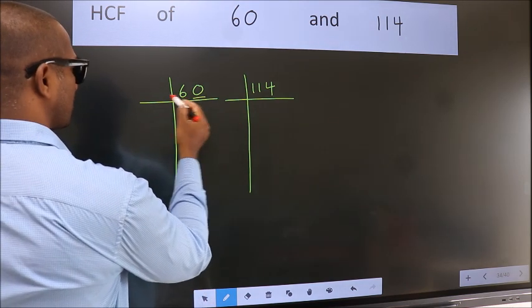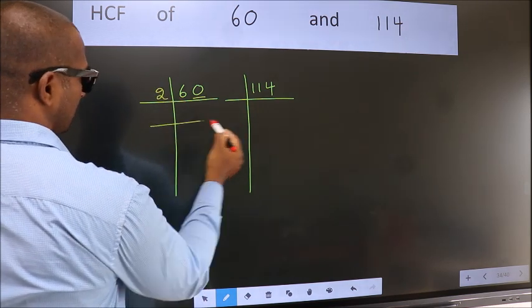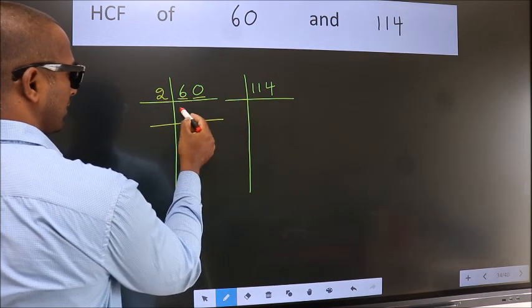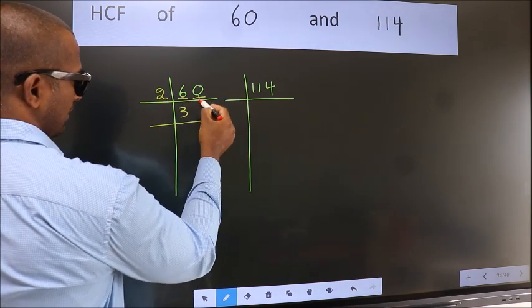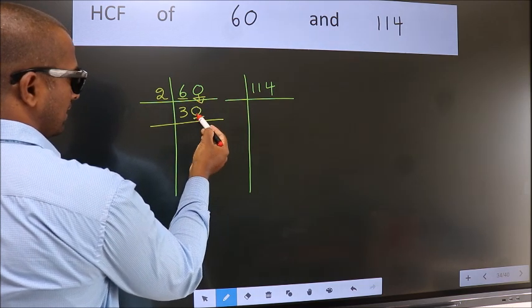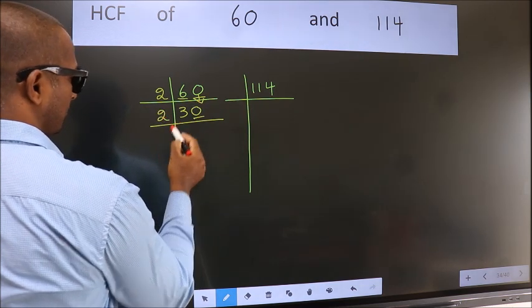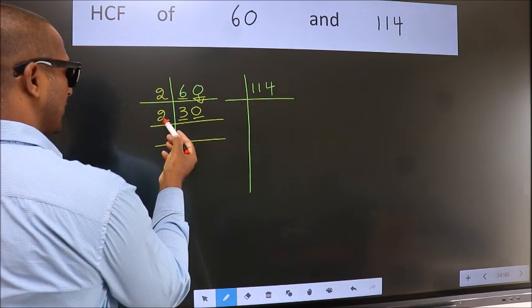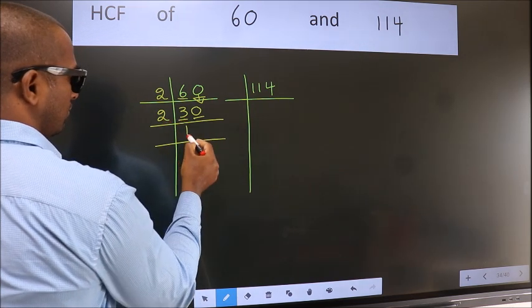Next. Last digit 0, so take 2. First number 6, when do we get 6 in 2 table? 2, 3, 6. This 0 as it is, down. Now last digit 0, so take 2. First number 3, a number close to 3 in 2 table is 2, 1, 2.